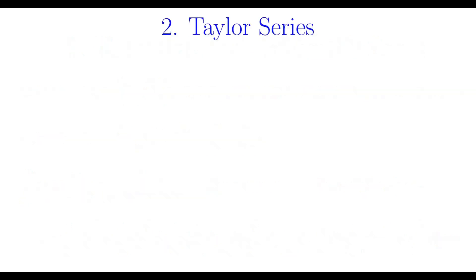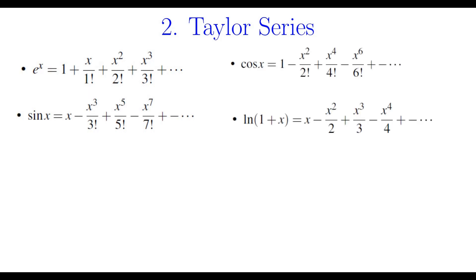The next method is using Taylor series. The way we do that is we relate the given sum with a Taylor series. Before we can do that, we need to remember our formulas for Taylor series. So the key formulas that you need to remember are these five formulas: the power series for e to the power of x, the Taylor series for sine of x, cosine of x, natural log of 1 plus x, and finally the binomial formula.